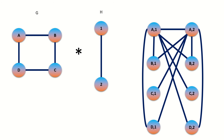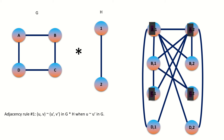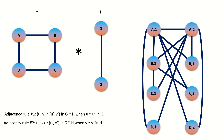On to vertex B1. By the first adjacency rule, B1 will connect to vertices A1, A2, C1, and C2, as their left entries are adjacent to vertex B in graph G. By the second adjacency rule, B1 will connect to vertices A2, B2, C2, and D2, as their right entries are adjacent to vertex 1 in graph H.